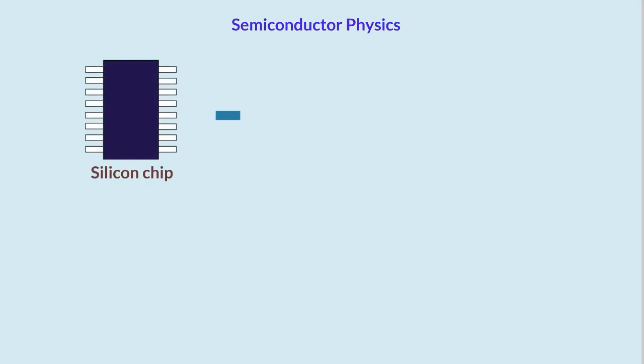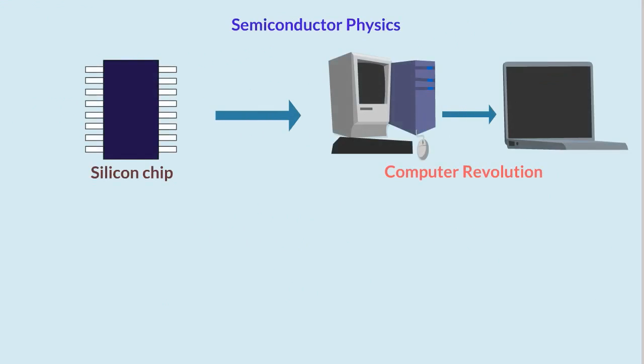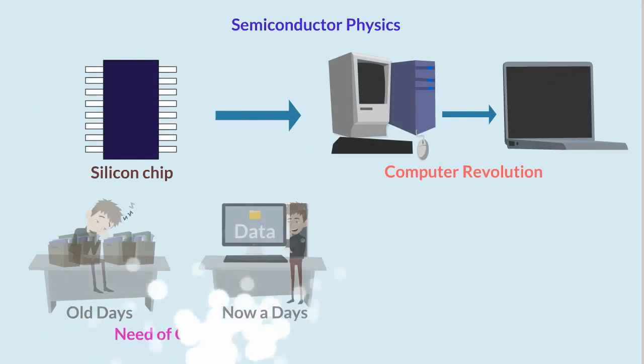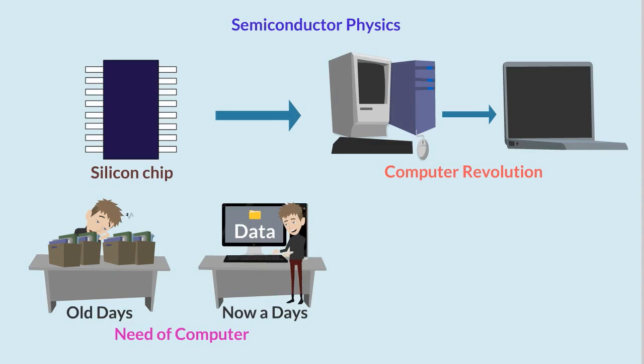Another example is introduction of semiconductor physics. That is silicon chip which gave rise to computer revolution and everybody knows the need of computer in human lives. So it is worth saying that a small computer chip is facilitating the working of whole world.